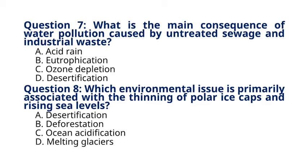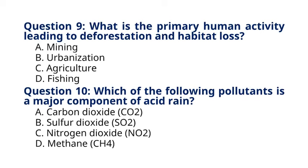Question 9. What is the primary human activity leading to deforestation and habitat loss? A. Mining. B. Urbanization. C. Agriculture. D. Fishing. The correct answer to question 9 is option C. Agriculture. Explanation: deforestation and habitat loss are primarily driven by agricultural expansion, including clearing forests for crop cultivation, grazing land, and palm oil plantations.